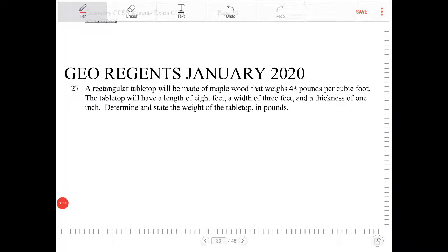A rectangular tabletop will be made of maple wood that weighs 43 pounds per cubic foot. The tabletop will have a length of 8 feet, a width of 3 feet, and a thickness of 1 inch.